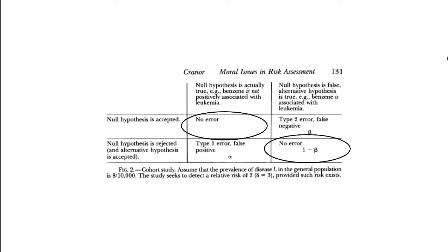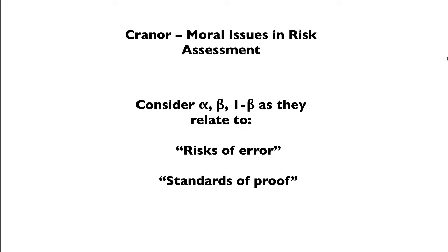So what we're trying to do in these kind of experiments, when you're investigating compounds that might be harmful, is you're trying to stay in the two zones here, the upper left and the lower right. The null hypothesis is accepted and the null hypothesis is actually true, or the null hypothesis is rejected and the alternative hypothesis that something is harmful is accepted. You're trying to avoid Type I errors, which is a false positive, and Type II errors, which are a false negative. So now we're going to consider alpha, beta, 1 minus beta, and risk of errors and standard of proof.